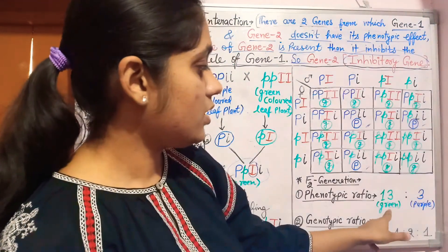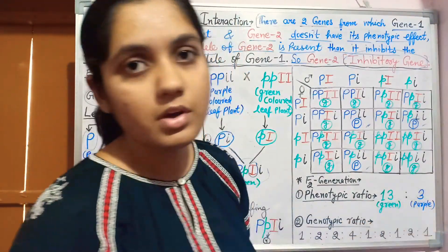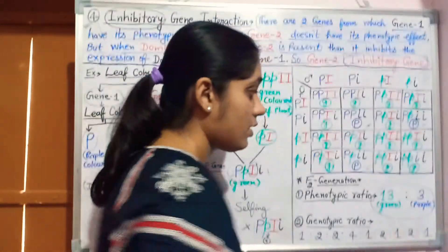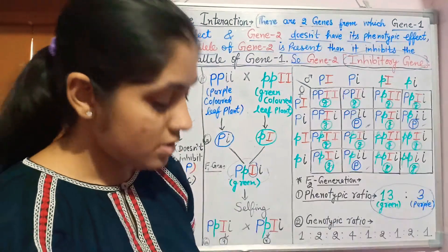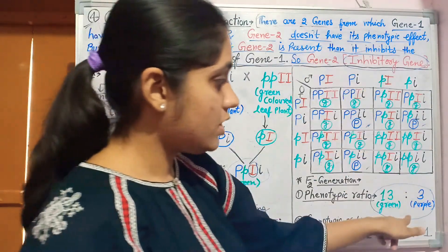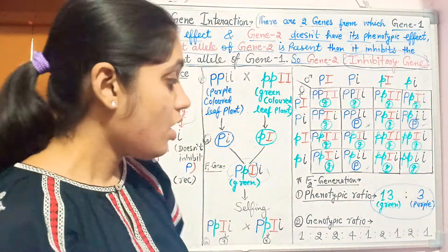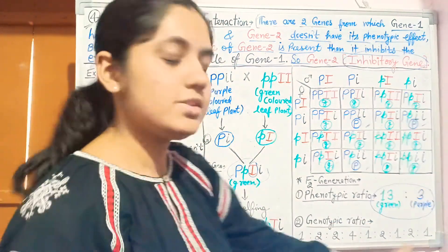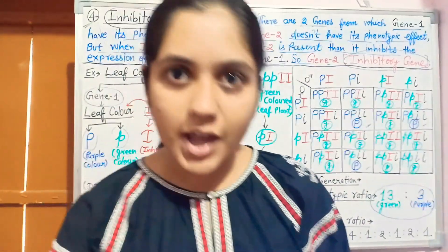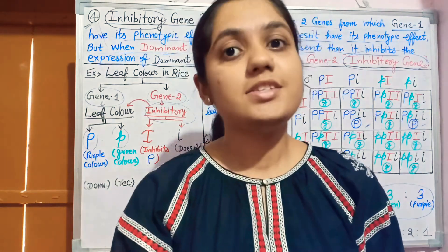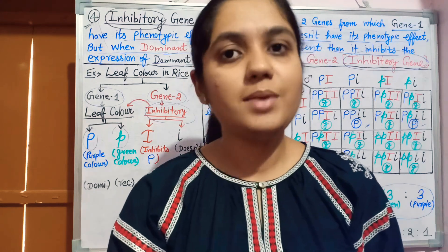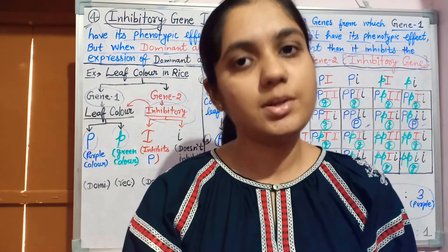That is why the F2 generation phenotypic ratio deviates from Mendel's dihybrid cross — it is 13:3, meaning 13 green-colored leaf plants to 3 purple-colored leaf plants. This is the reason for the inhibition and deviation in the phenotype of the F2 generation. The genotypic ratio remains the same. I hope you understood — if you liked the video, press the like button, share it, subscribe to Asma's Botany, and press the bell icon for the latest updates.